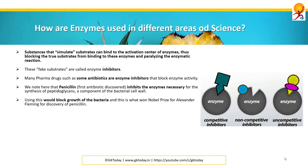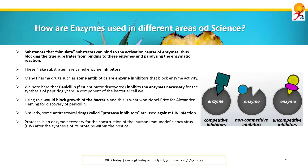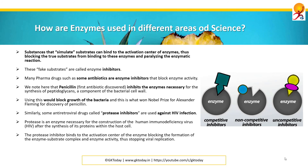Using this would block growth of the bacteria, and this is what won the Nobel Prize for Alexander Fleming for the discovery of penicillin. Similarly, some antiretroviral drugs called protease inhibitors are used against HIV infection. Protease is an enzyme necessary for the construction of human immunodeficiency virus after the synthesis of its proteins within the host cell. The protease inhibitors bind to the activation center of the enzyme, blocking the formation of the enzyme-substrate complex and stopping the viral replication.